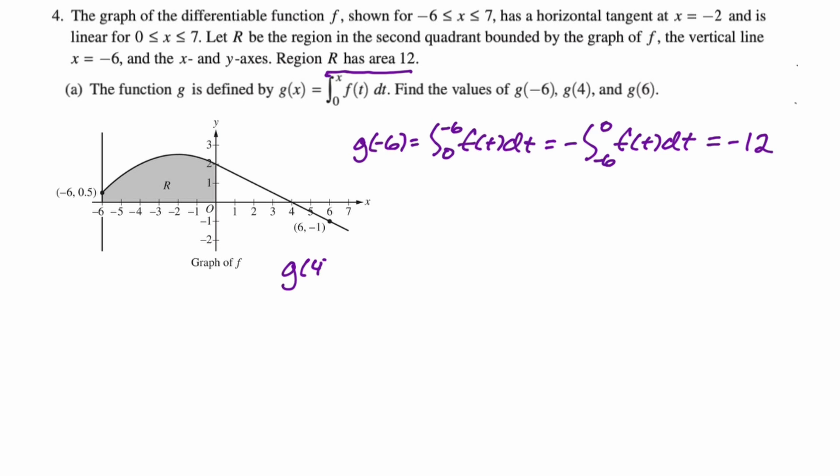g of four is the integral from zero to four f of t dt. This is just pure geometry. Now it's important to remember that we're linear between zero and seven. So f is linear between zero and seven, which means that we can just find the area of this triangle, which is one half, the base is four, the height is two. So just four.